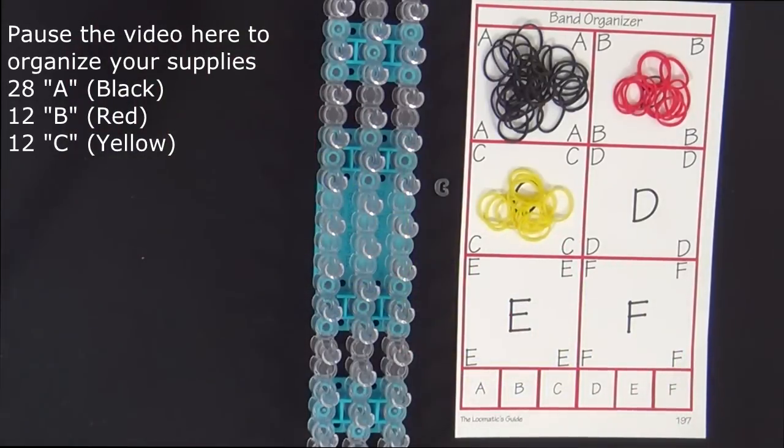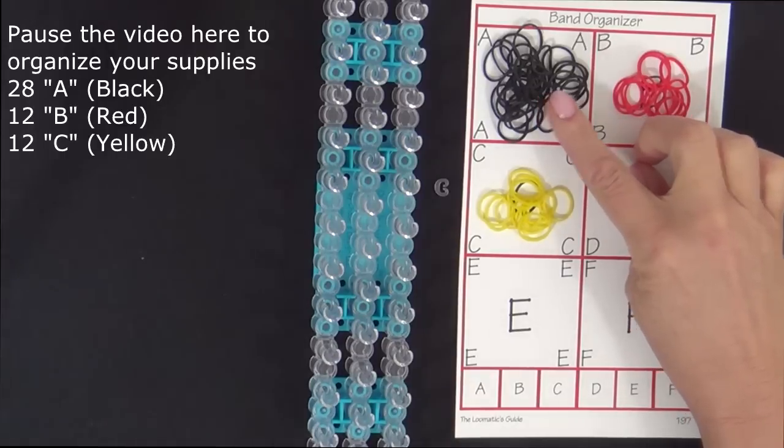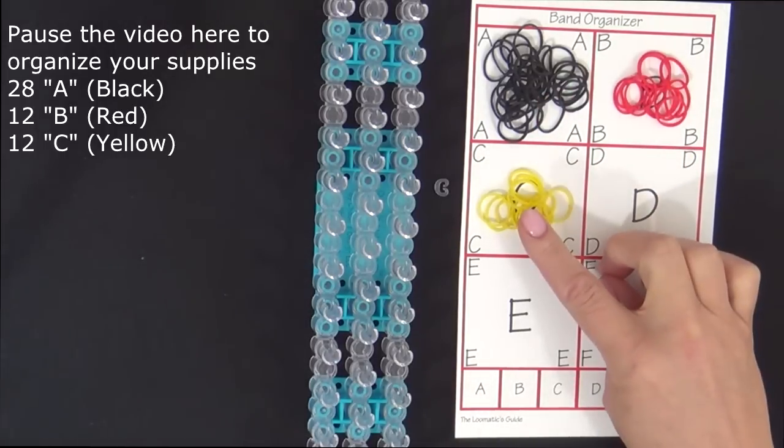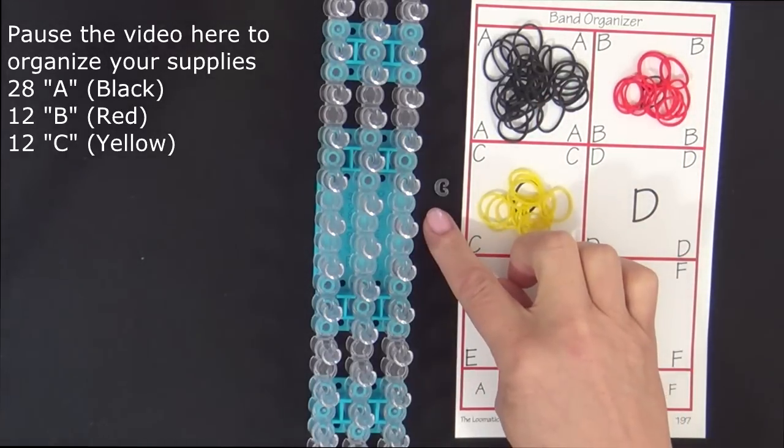To make this bracelet you will need 28 A colored bands, 12 B colored bands, 12 C colored bands, and a C-clip.